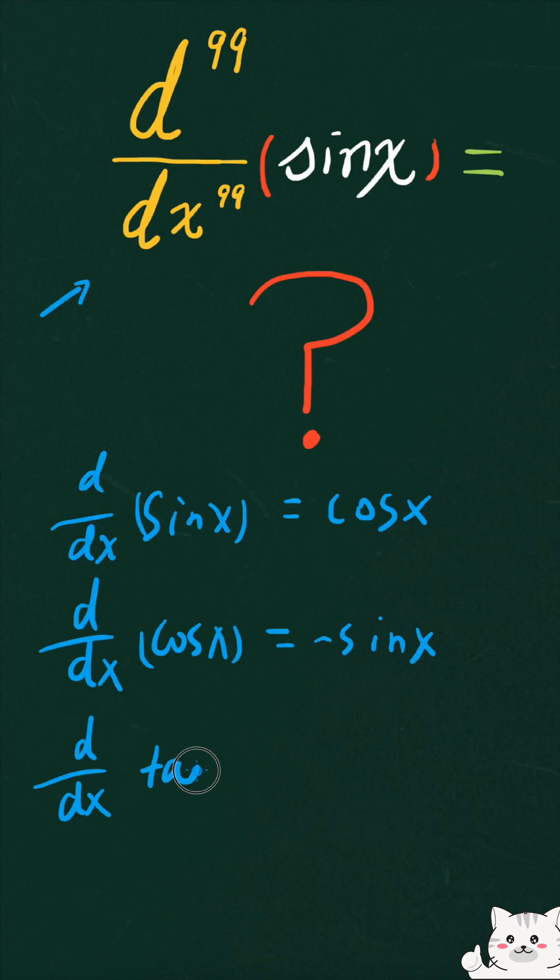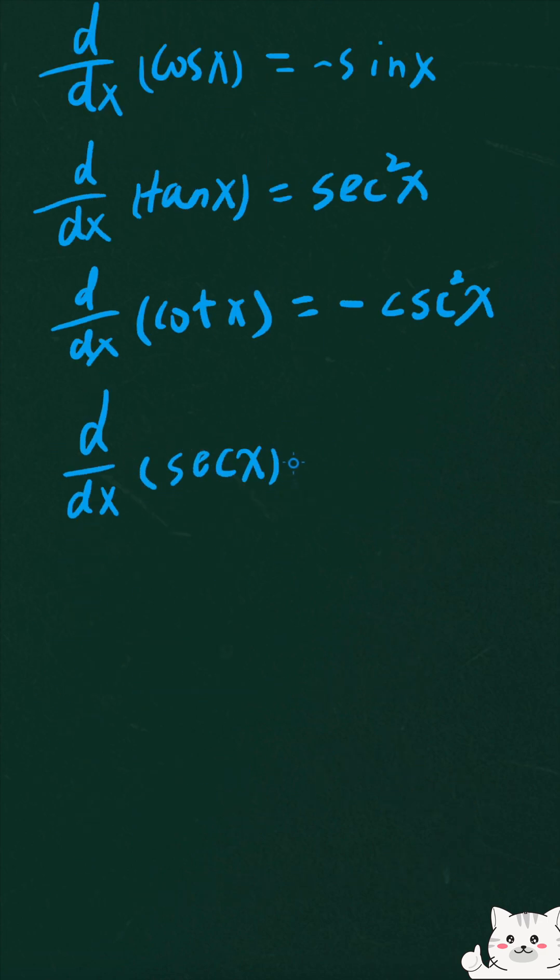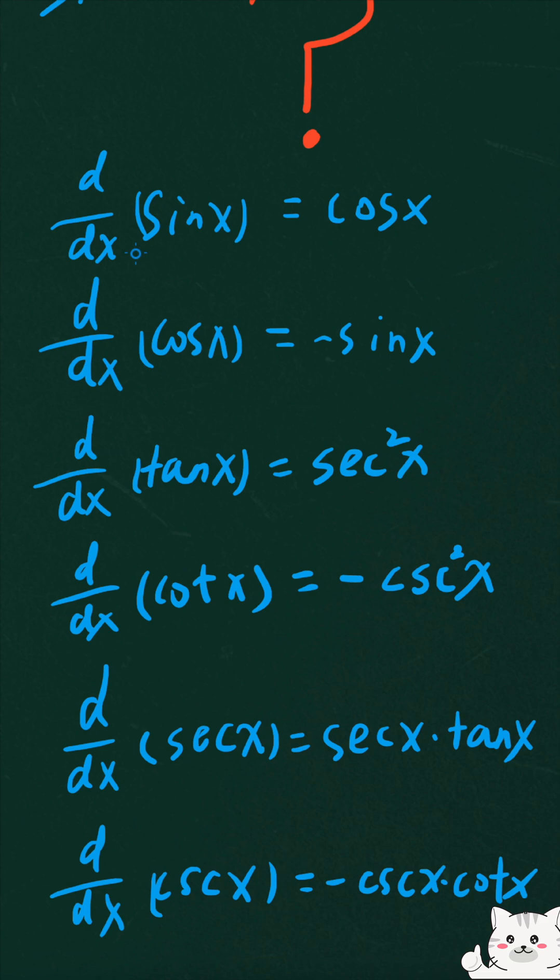The derivative of tangent x is equal to secant x squared, and the derivative of cotangent x is equal to negative cosecant x squared. The derivative of secant x is equal to secant x times tangent x, and the derivative of cosecant x is equal to negative cosecant x times cotangent x. So take a good look at these formulas, and we're going to need to use the first one.